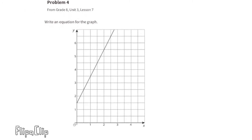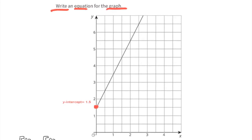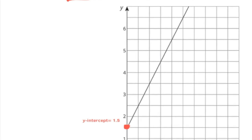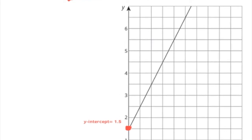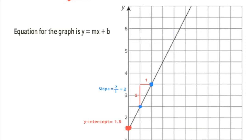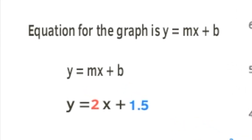Problem 4, from 8th grade Unit 3 Lesson 7: Write an equation for the graph. The line has a y-intercept of 1.5 and a slope of 2 over 1, or 2. We plug this into y equals mx plus b, where m represents the slope and b represents the y-intercept. Substituting, the slope 2 for m and 1.5 for b gives us y equals 2x plus 1.5.